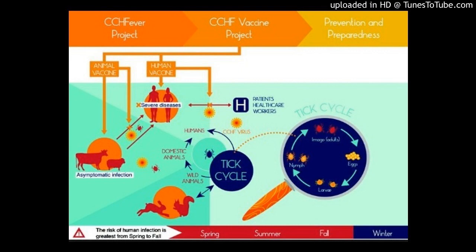The ticks were identified using morphological characteristics, and the presence of CCHFV RNA was detected using RT-PCR. Results: Data revealed the presence of CCHFV in 5.3% of the ticks selected for screening. The infected ticks belong to Hyalomma dromedarii, Hyalomma anatolicum, Hyalomma marginatum, and Rhipicephalus sanguineus species.